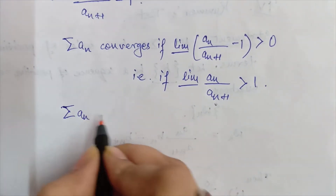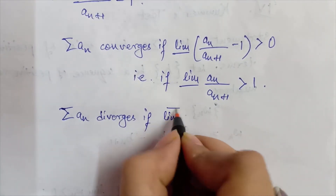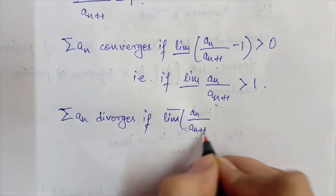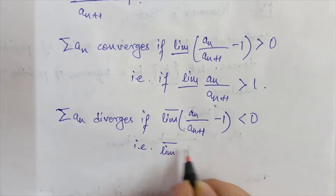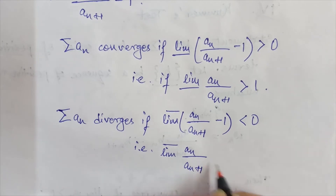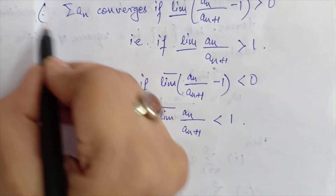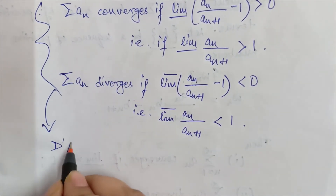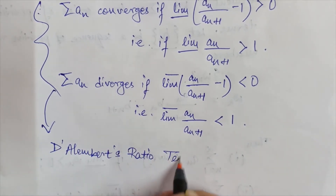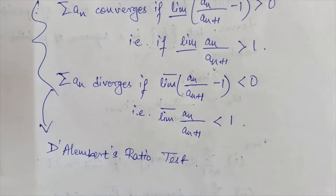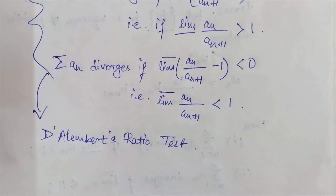Also, the series a_n diverges if the upper limit of (a_n / a_{n+1}) - 1 is less than 0, which means the upper limit of a_n / a_{n+1} is less than 1. This is D'Alembert's ratio test, which we have already studied.